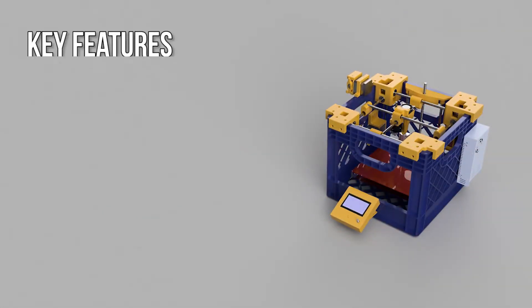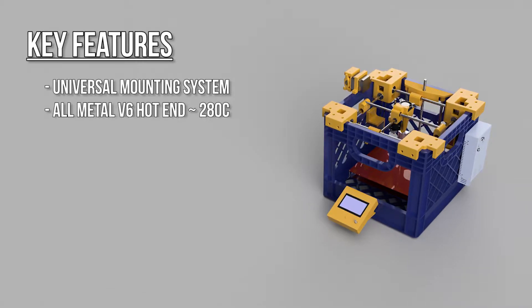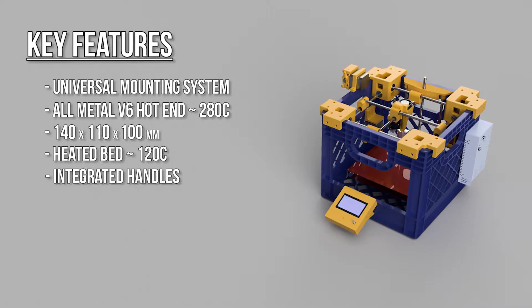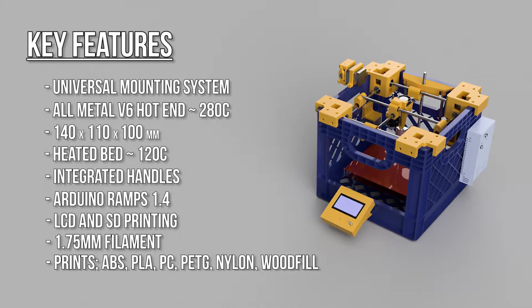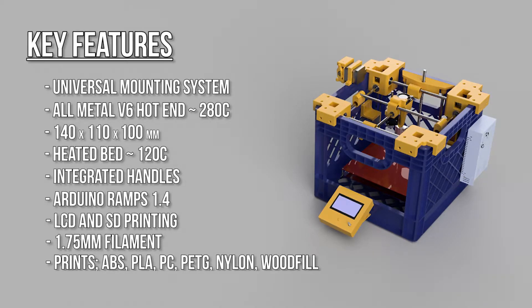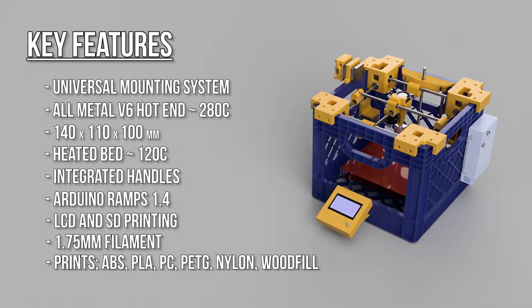Some of the key features of this printer include a universal mounting system that can fit any milk crate, an all-metal V6 hotend that can reach up to 280 degrees Celsius, and a workable print volume of 140 by 110 by 100 millimeters.